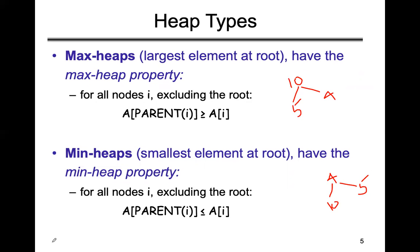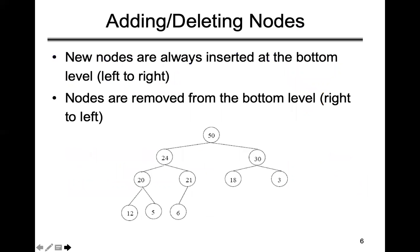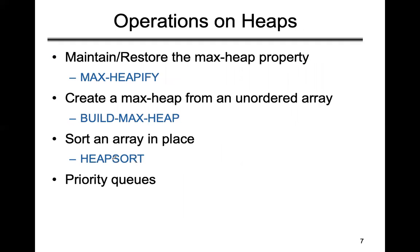New nodes are always inserted at the bottom level only. If you want to insert any new node in the tree, it must be inserted at the bottom level. Similarly, nodes are removed from the bottom level — both insertion and removal happen at the bottom level only. You cannot insert at the root level.